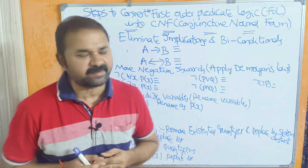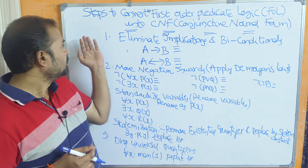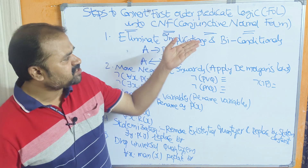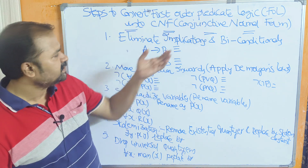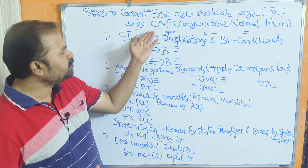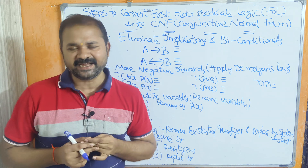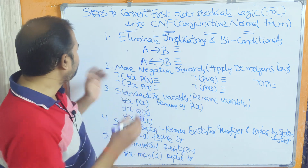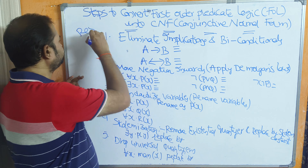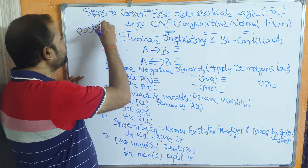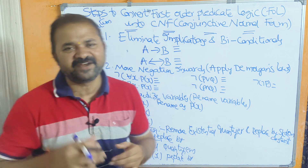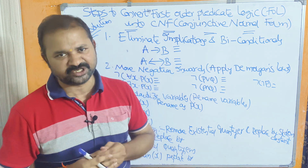Let us discuss the steps to convert first order predicate logic (FOL) into conjunctive normal form (CNF). This is the first part on resolution. In the upcoming three videos we will solve three different problems on resolution.